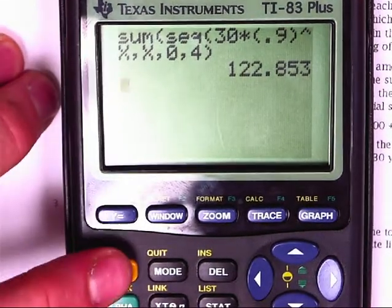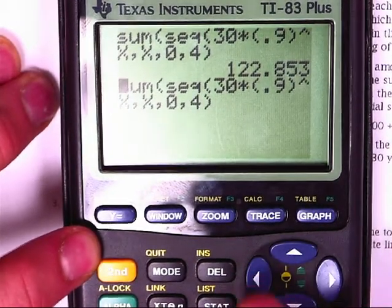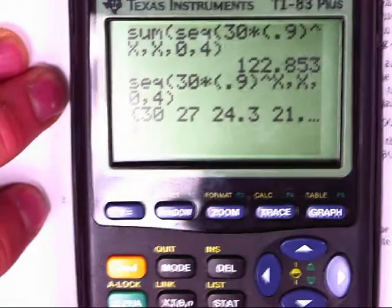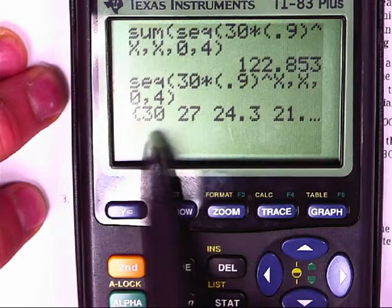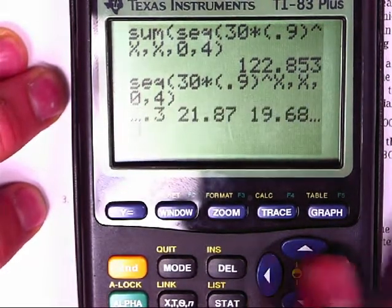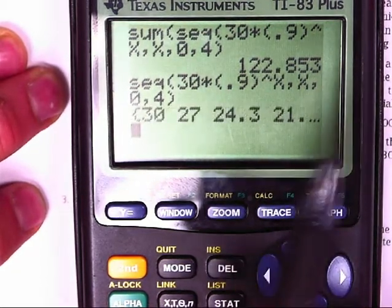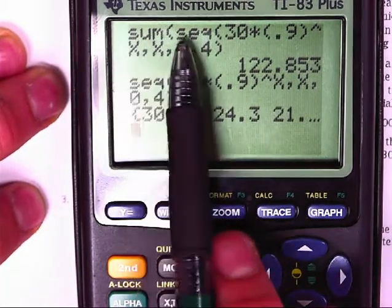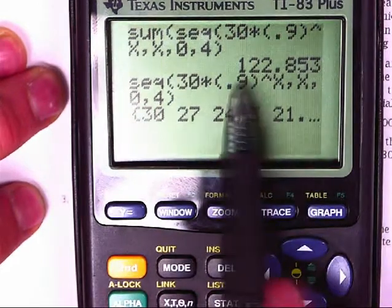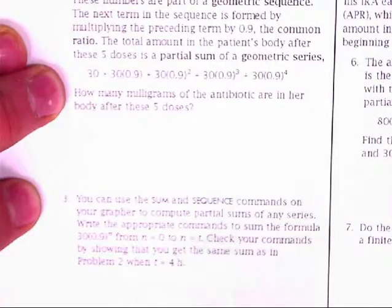What it's technically doing is adding up all the terms of the sequence. So if I go through this and delete the sum command and hit enter here, it lists out all of the terms of that sequence: 30, 27, 24.3, et cetera. You can see that would be nice if you have 10 terms or 20 terms or something. So the sequence command lists all those terms out. When you do the sum of the sequence, it automatically adds all those things to get your 122.853. That's what the sum and sequence command is that it's referring to here.